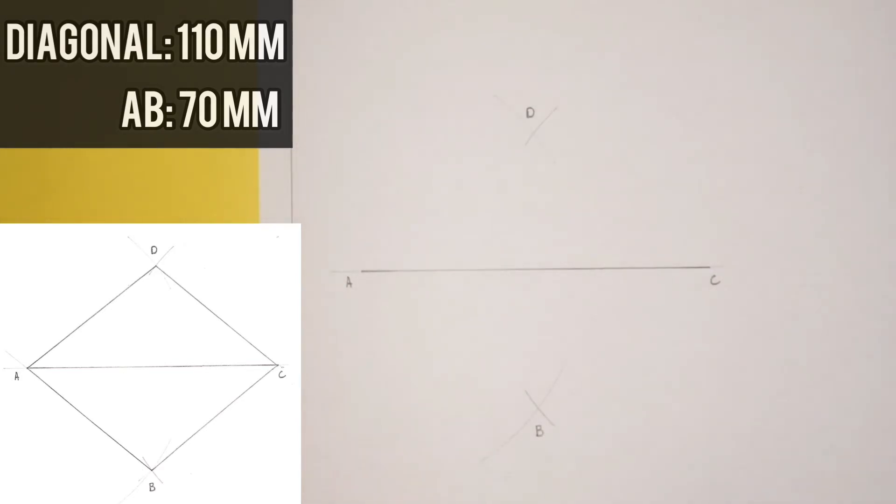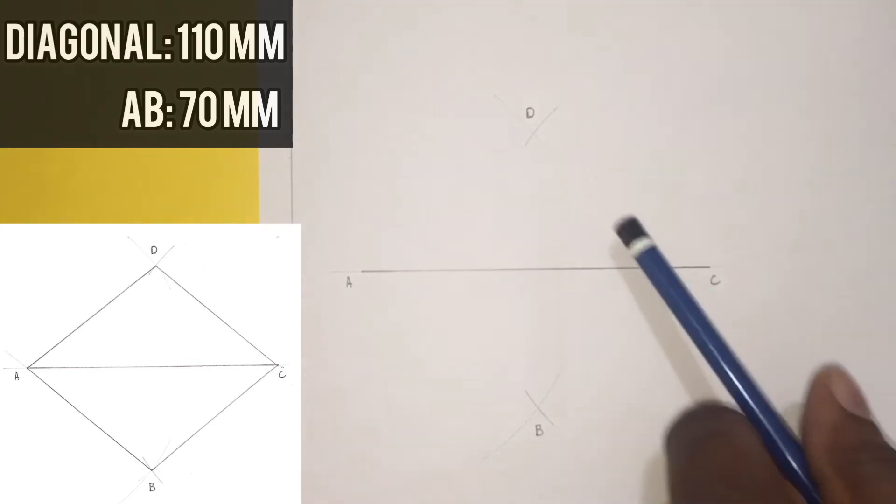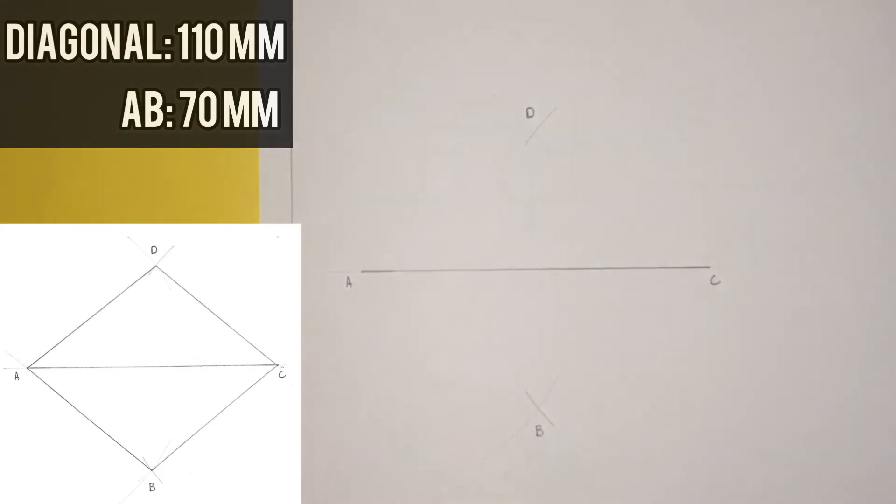I will now draw a line from A to B, B to C, and C to D, also A to D to give me my required rhombus.